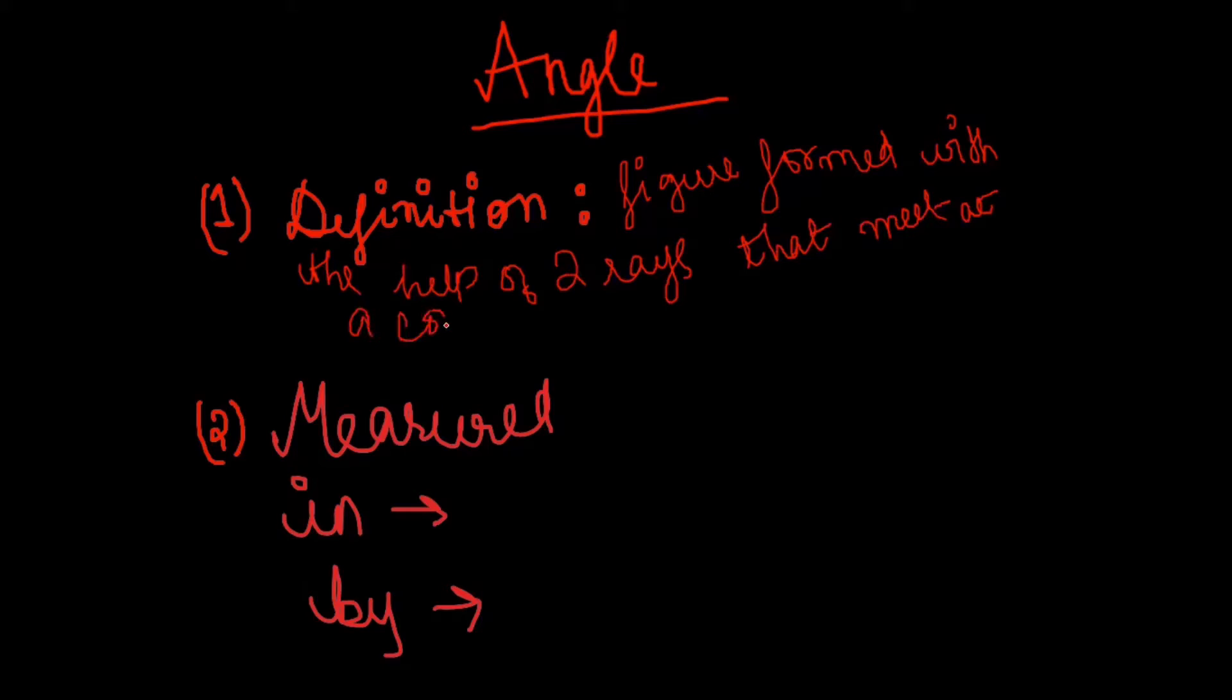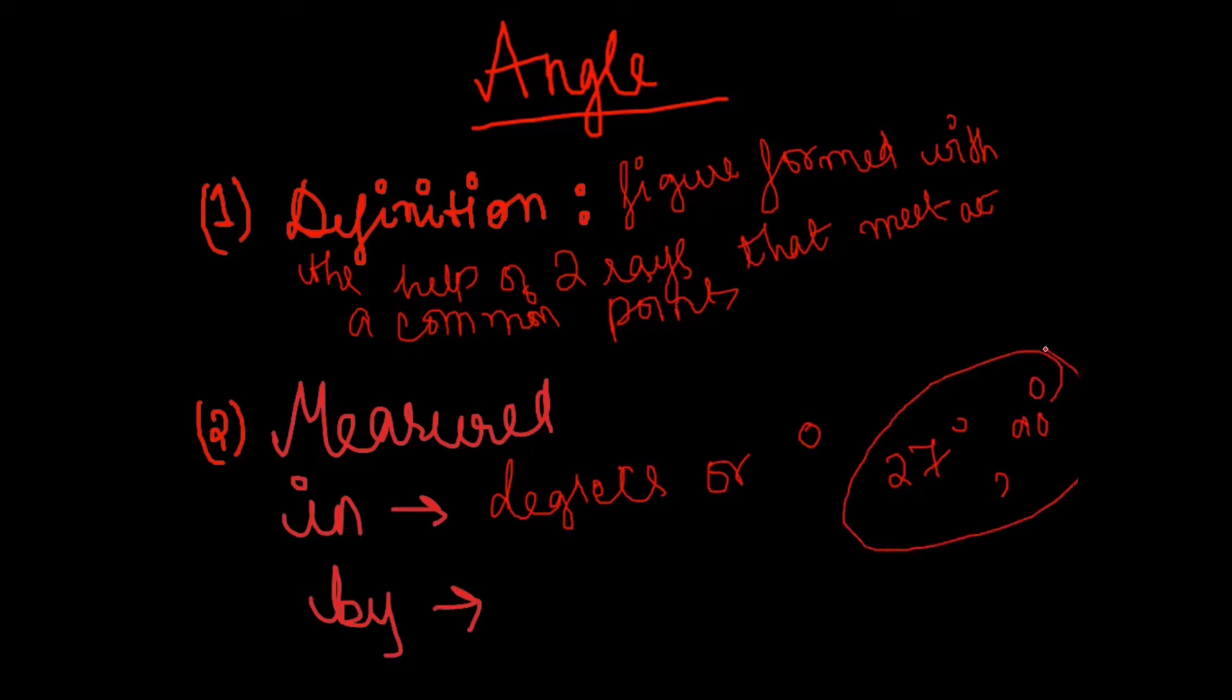Now you will be thinking how do we exactly measure angle and what do we measure it in? We measure it in degrees, which is also denoted by this symbol. So here we can say 27 degrees, 37 degrees, these are the examples. It is measured by an instrument called protractor which looks something like this and is a very important part of your geometry box.